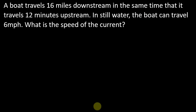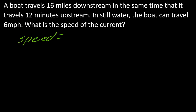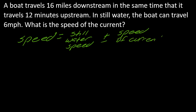Now here's a very similar problem. A boat travels 16 miles downstream in the same time it can travel 12 miles upstream. In still water the boat can travel 6 miles per hour. So this time the still water speed is known, and you're being asked to find the speed of the current. The setup is very similar to the last one - go ahead and try to set it up, figure out where x goes, and then hit play when you're ready.